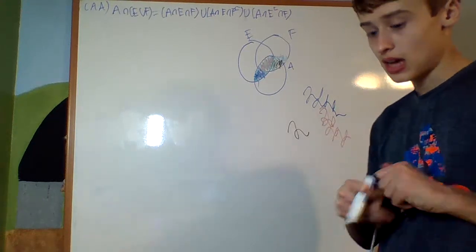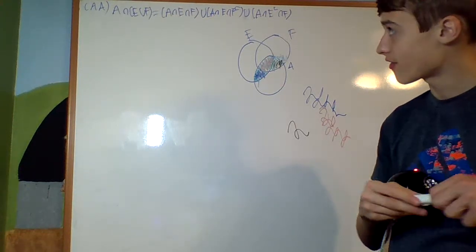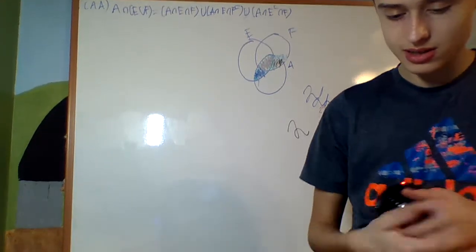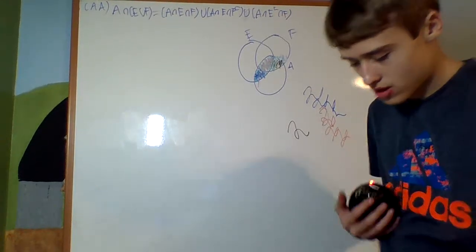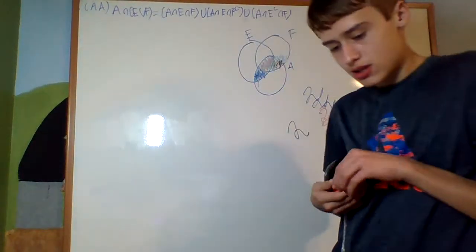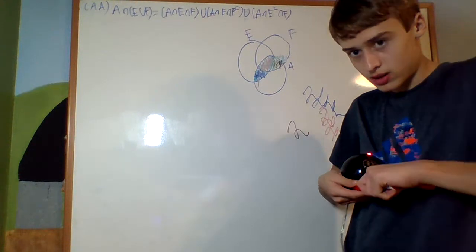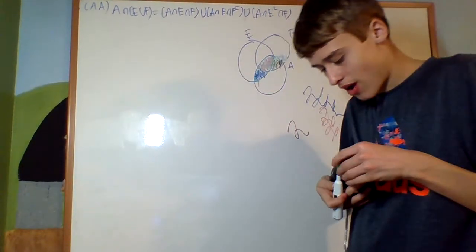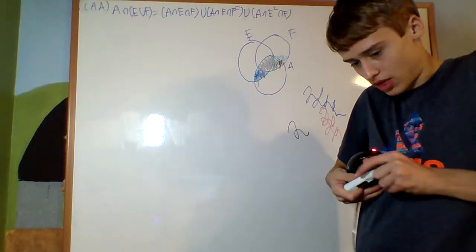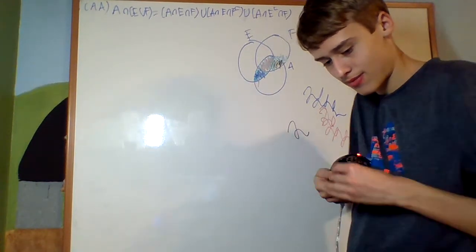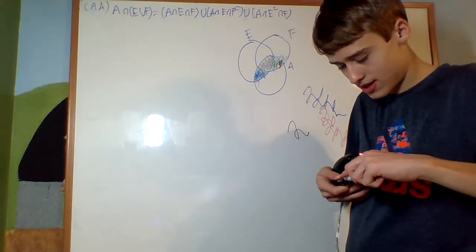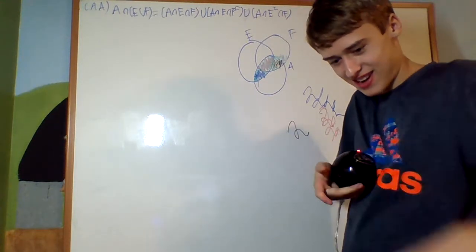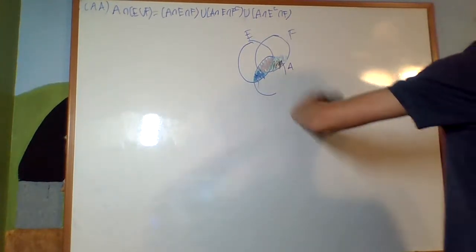So that's what that fact says, is that if you do the intersection with a union, you can just split it up into a bunch of parts. And those parts will be useful for the following theorem.